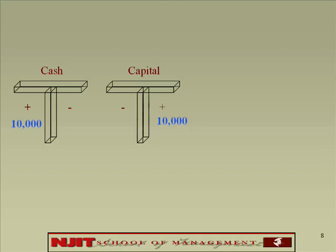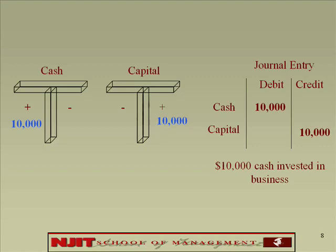Once you have done that, it's imperative that you write this down explaining the left entry, which is debit, and the right entry, which is credit. This is done in a book called a journal — hence it's known as a journal entry. Cash was a left entry of $10,000. Capital was a right entry of $10,000. You explain in English what happened: 10,000 cash invested in the business.